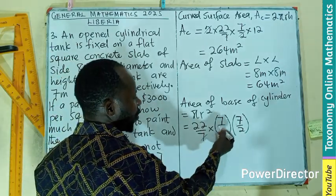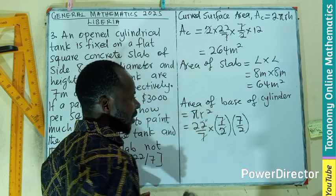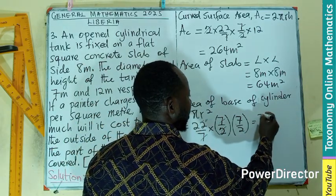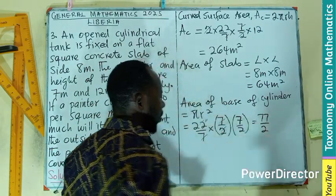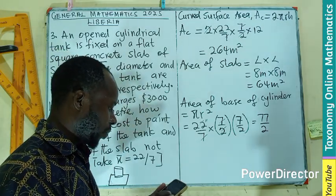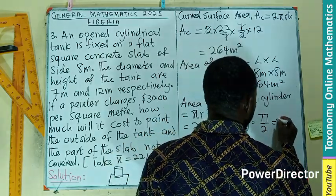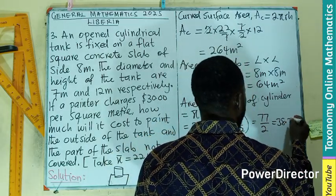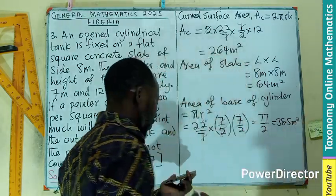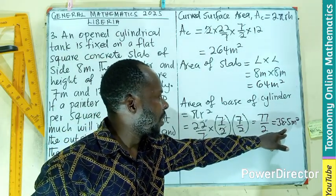This 7 will cancel this, this 2 will cancel this, will be 11. So I should be having 77 divided by 2. And if you find that, you should be having 38.5 meter square. So this is the area of the base, this is the area of the slab.